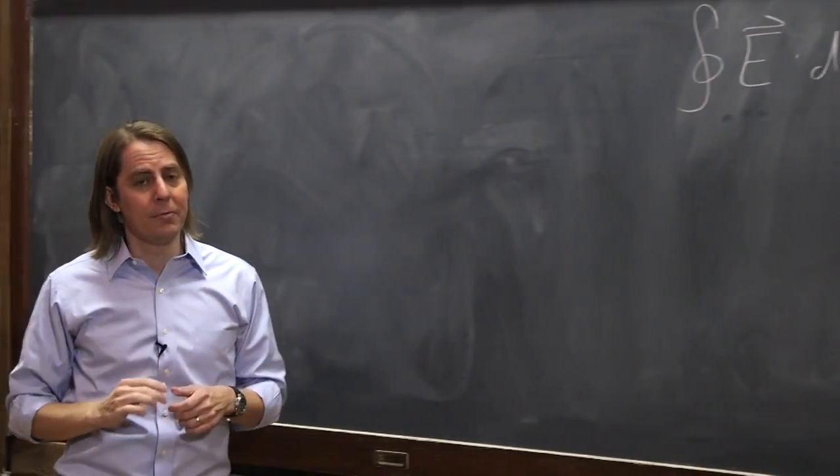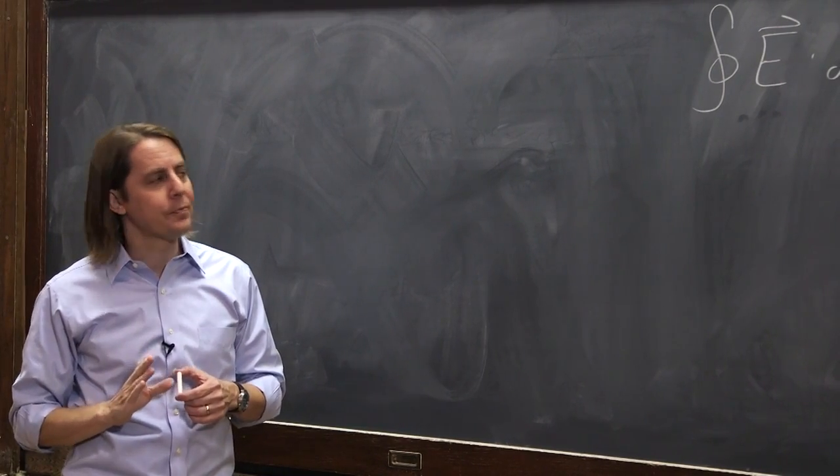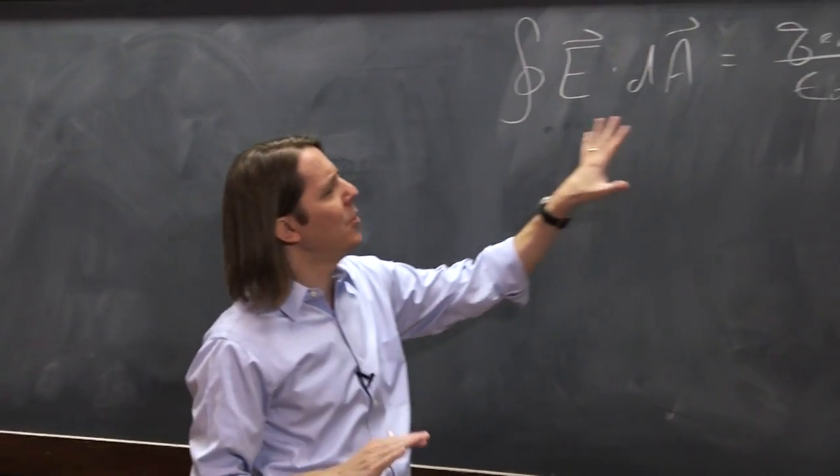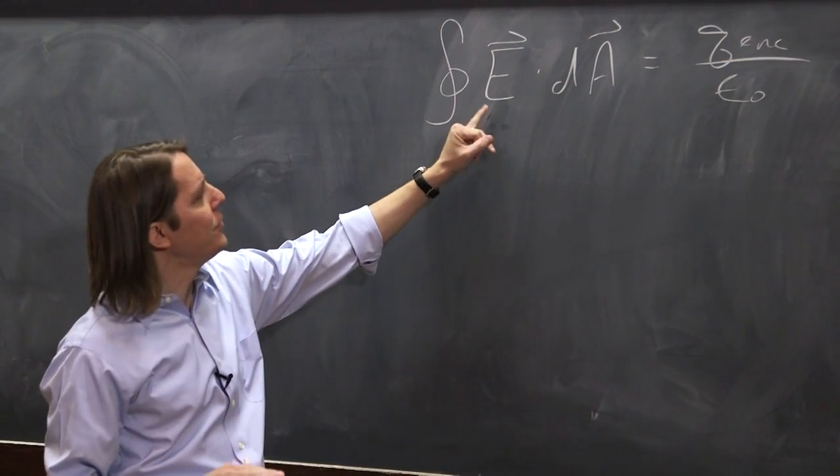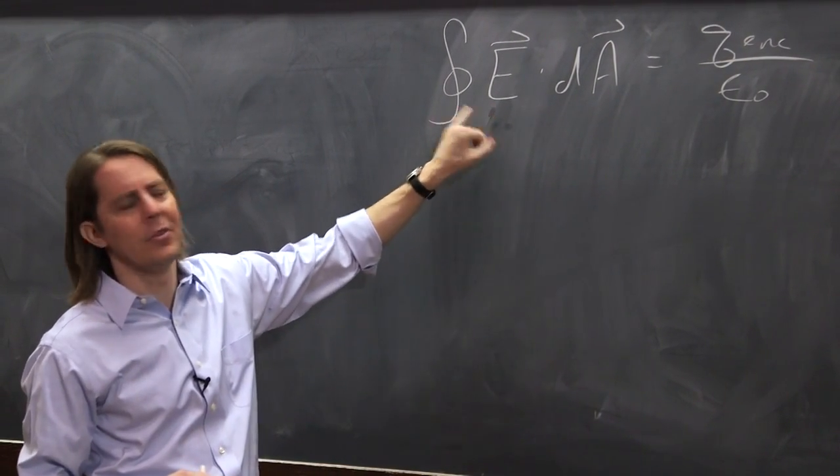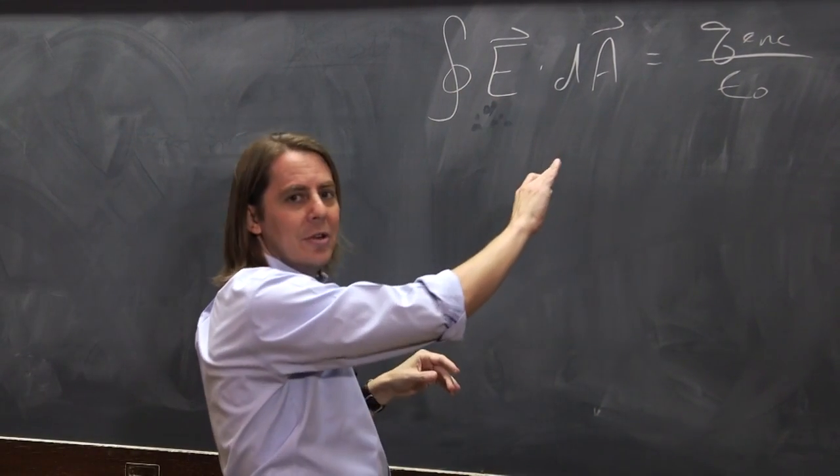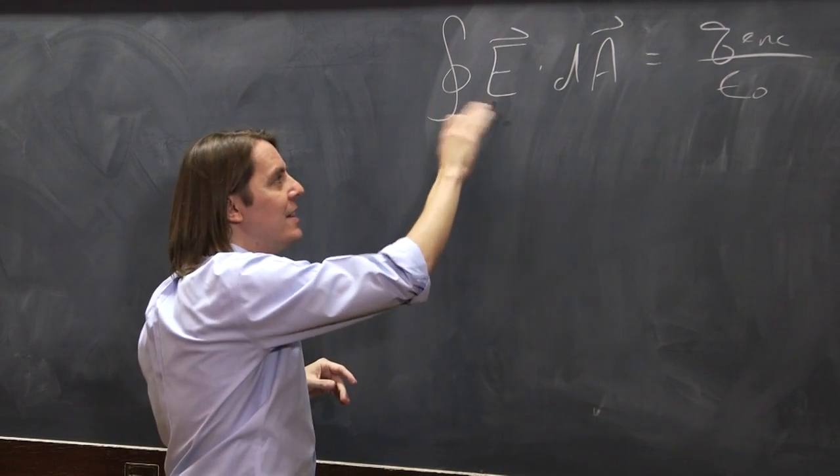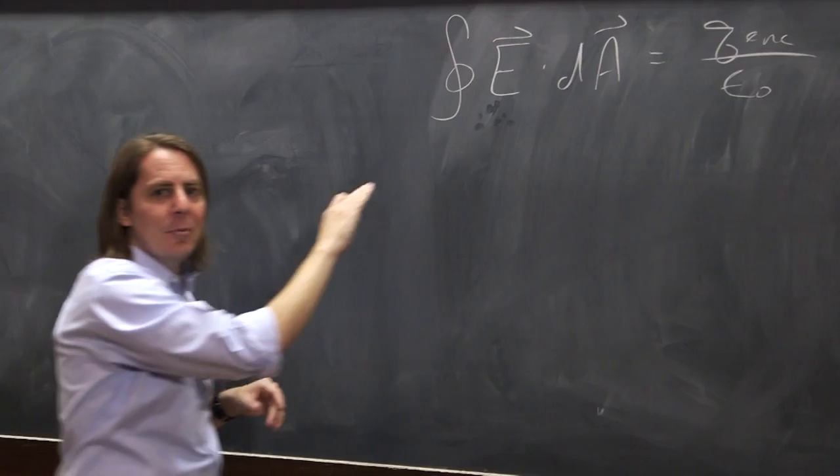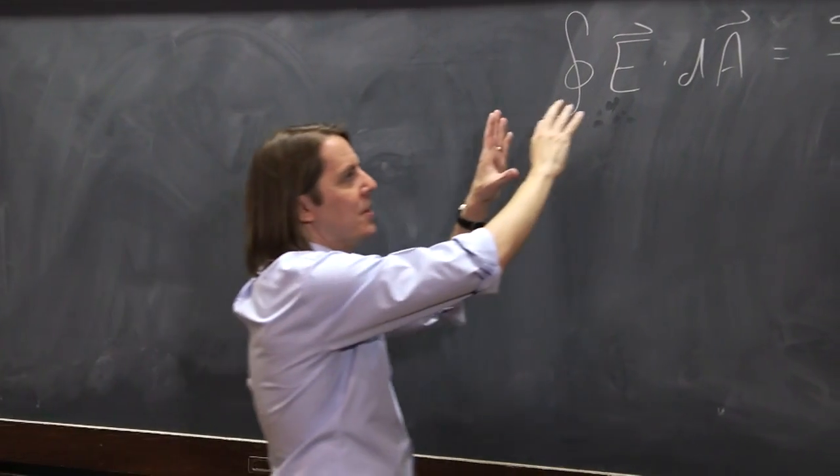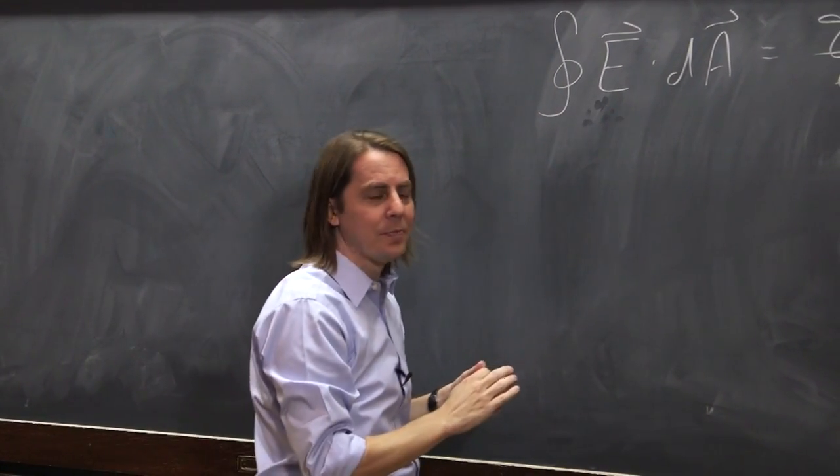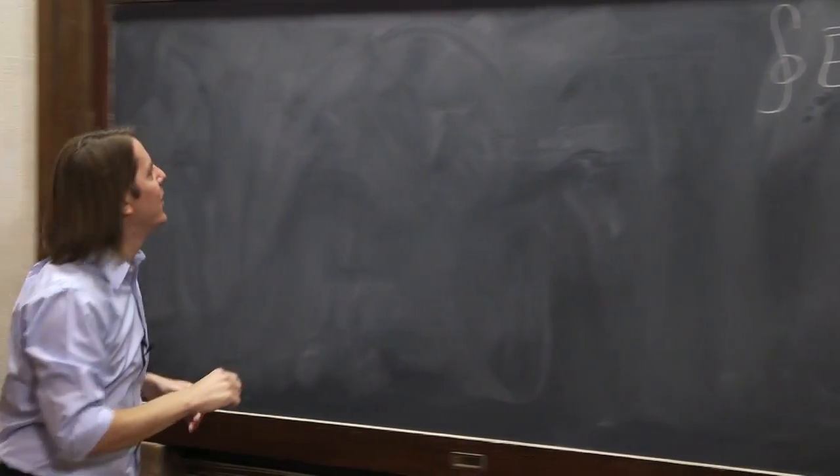What Gauss's law is really good for is calculating the electric field. That's not obvious because the E field is buried in this surface integral, this big vector calculus mess. You can't solve for E equals directly, but it turns out it's actually very powerful for finding the E field if you understand how the vector calculus works.